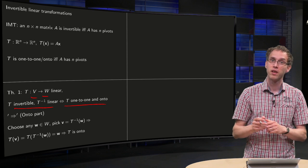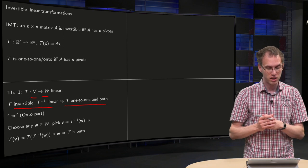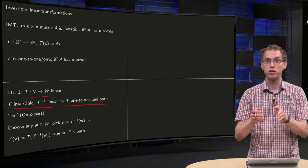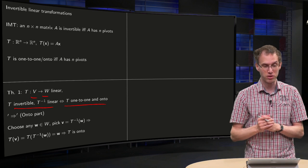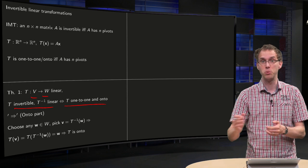So, why is if T is invertible and T inverse is linear, why do you necessarily have that your transformation T is onto and 1-to-1?